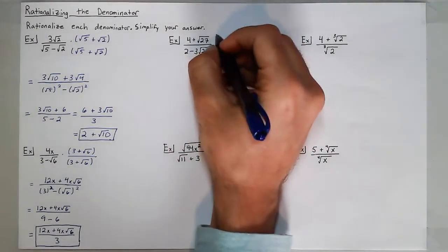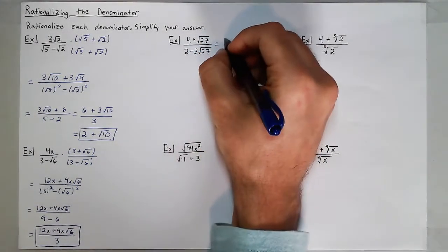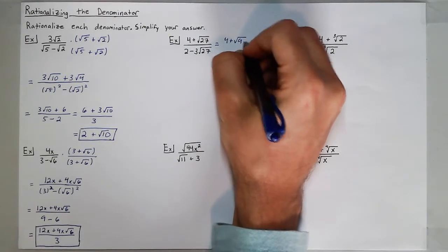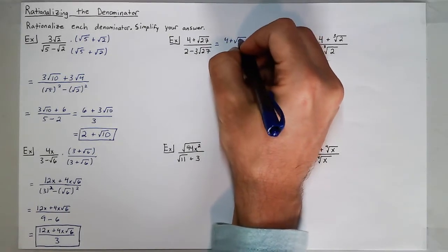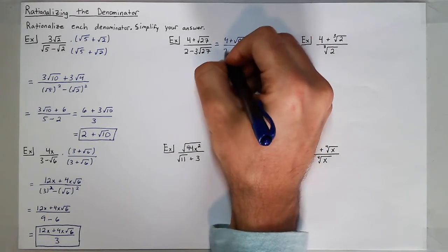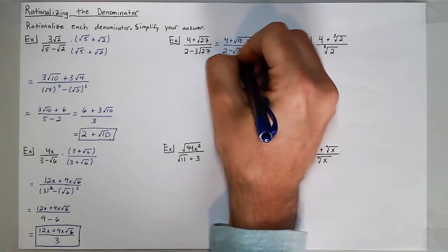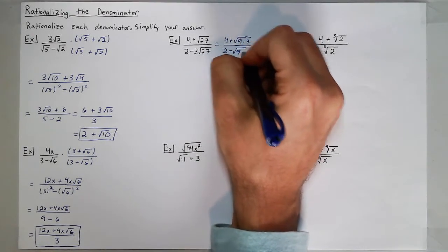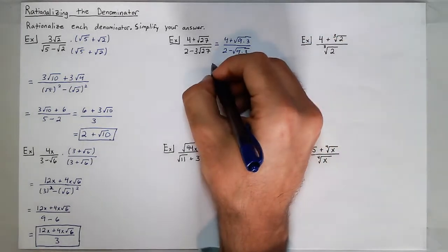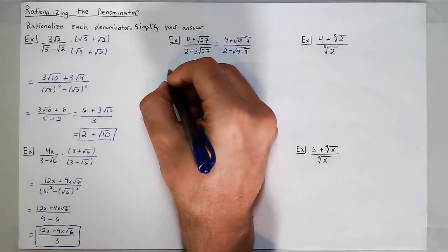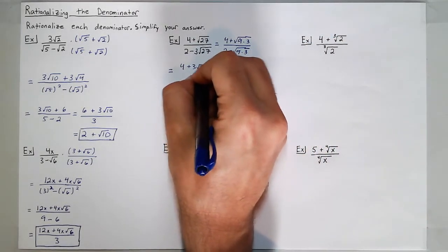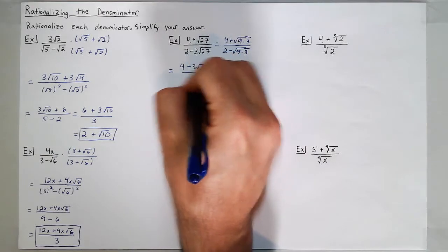I can rewrite the square root of 27 as the square root of 9 times 3, both in the numerator and denominator. The square root of 9 is 3, so now I have 4 plus 3 square roots of 3 over 2 minus 3 square roots of 3.